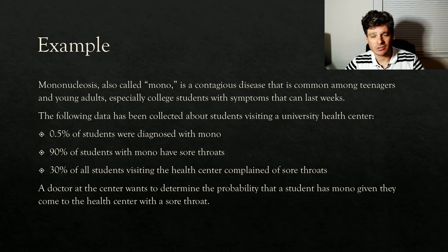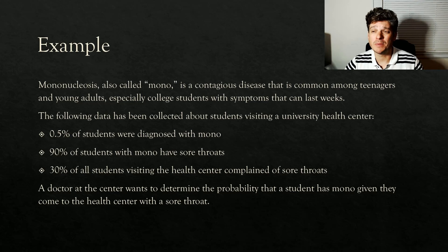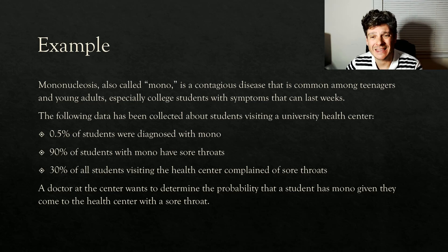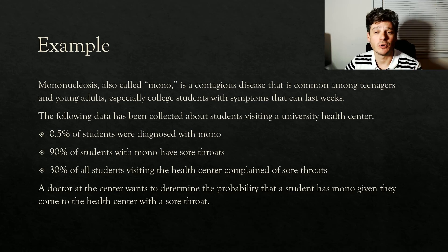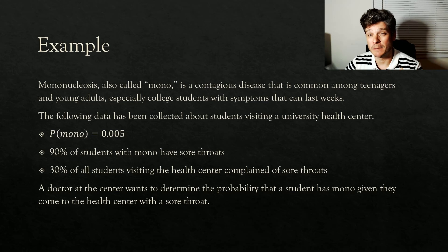A doctor at the center wants to determine: what is the probability that if a student comes in with a sore throat, they have mono? So first, let's take these percentages and convert them to proportions and probabilities using proper notation. The probability that a student has mono is 0.005.